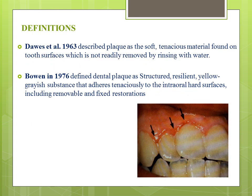Definitions. Davis et al. in 1963 defined plaque as a soft tenacious material found on the tooth surfaces which is not readily removed by rinsing with water. Bowen in 1976 defined dental plaque as a structured, resilient, yellow-grayish substance that adheres tenaciously to intraoral hard surfaces including removable and fixed restorations.